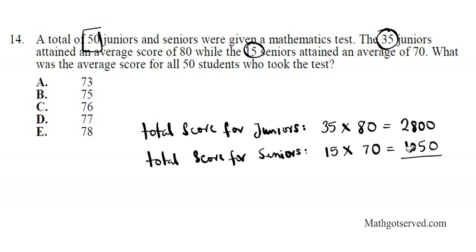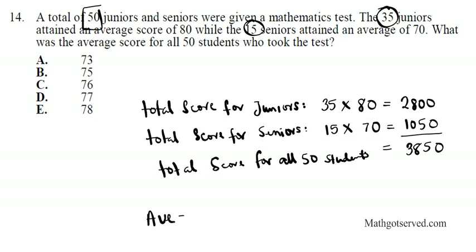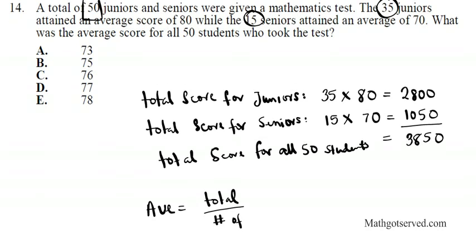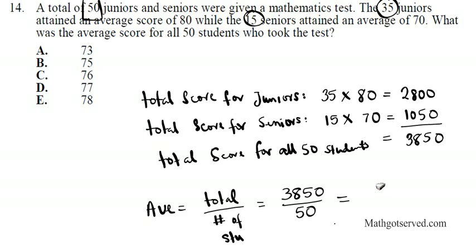Adding those together: 2800 plus 1050 equals 3850, which is the total score for all 50 students. The average is total divided by number of students: 3850 divided by 50 equals 77. So the average score for all 50 students is 77, and the answer is option D.